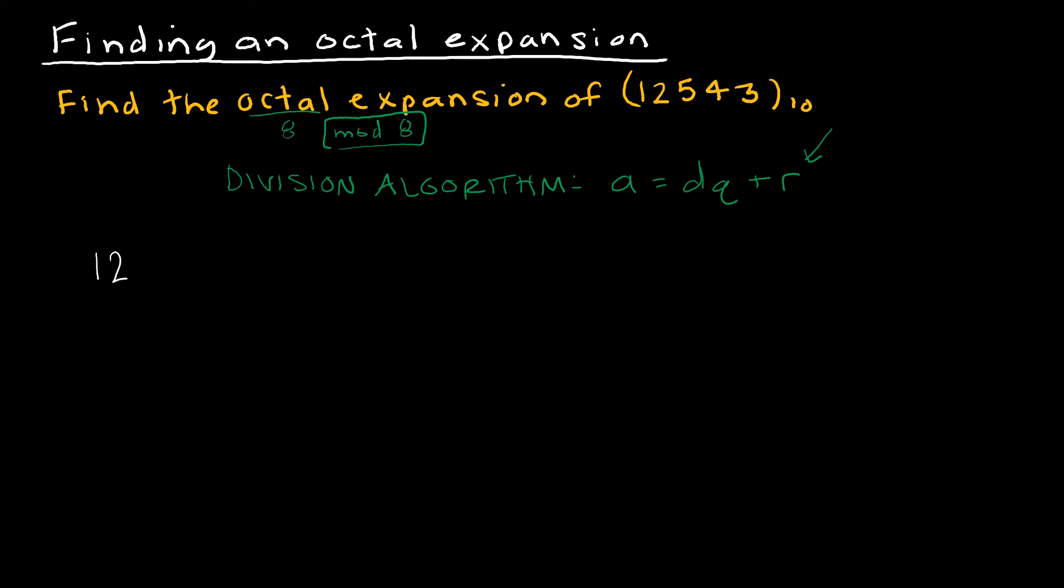We have 12,543. I'm going to write that as the divisor of 8, because of course we're dealing with octal, and then it's going to be times some number which is the quotient plus some remainder. Now I'm just going to use my calculator and say 12,543 divided by 8 and find some number, in this case 1,567, and then find the remainder of 7.